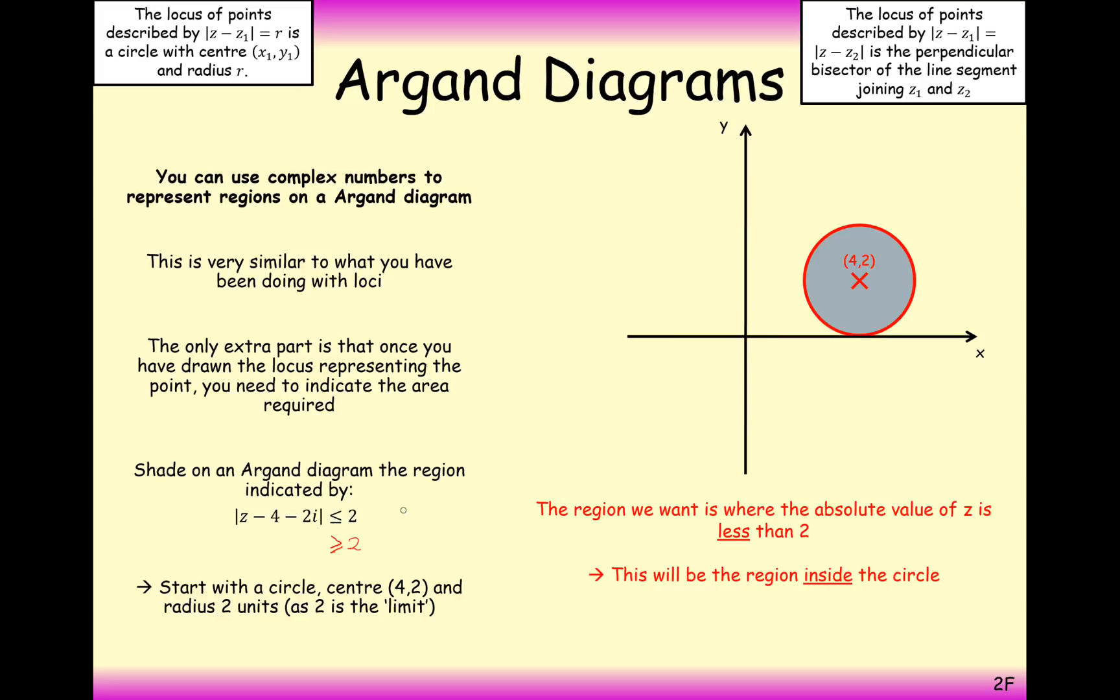If the symbol was just greater than 2, the way we would incorporate this into the diagram is we would have a dotted line around the circle to signify that the set of complex numbers does not include the boundary of this circle.